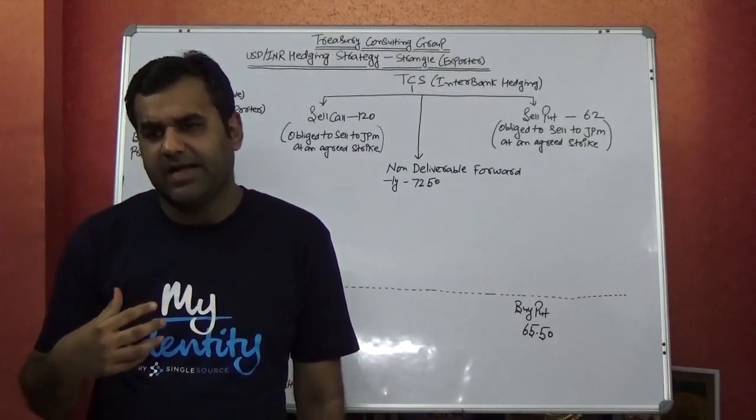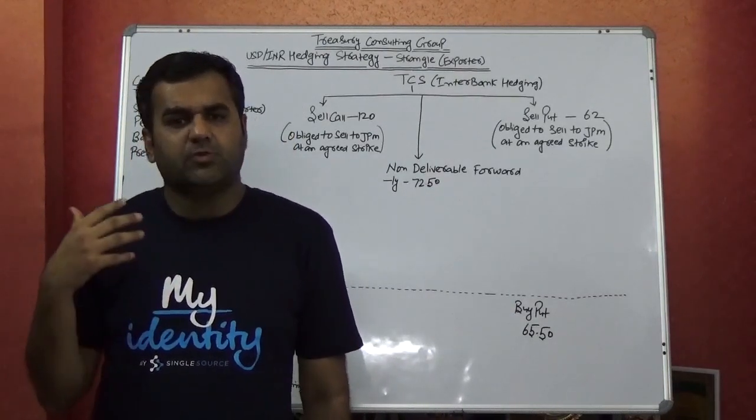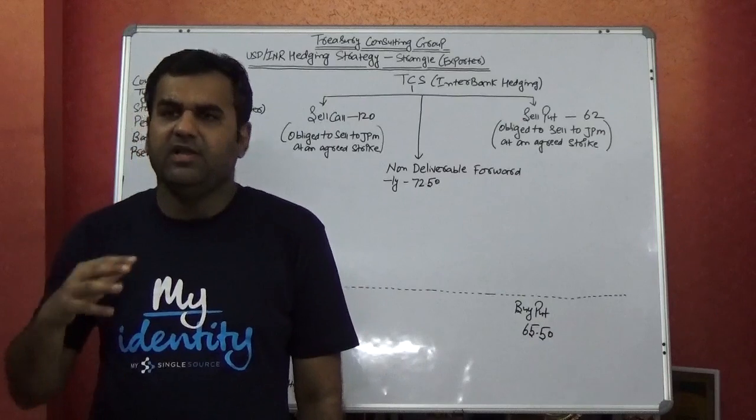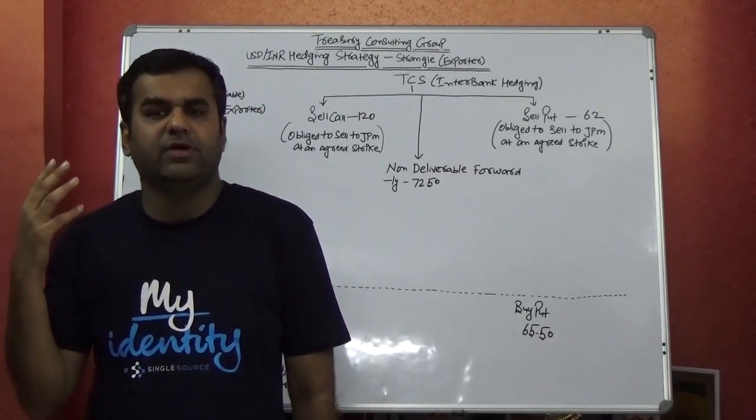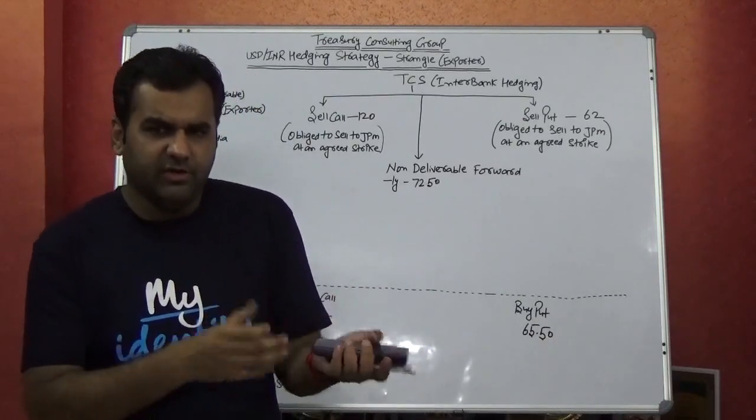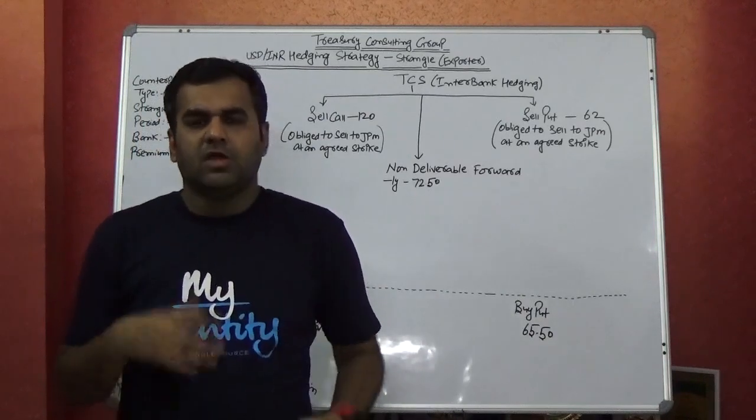Now, natural hedging is a concept whereby you have an export position of 1 billion dollars while you have an import position of 1.2 million dollars, or it could be alternatively. It's just an example.